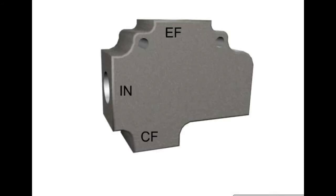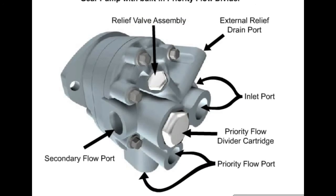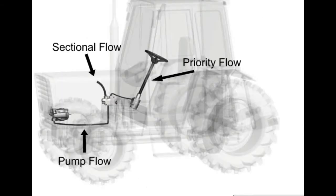A bypass flow control used as a flow divider is called a priority flow divider. The outlet ports will typically be labeled CF for controlled flow and EF for excess flow. A priority flow divider is often integral to the port cover of the hydraulic pump. When flow to a circuit is critical, a priority flow divider is used to help assure that the needed flow is available. Common applications are systems with steering or braking circuits.